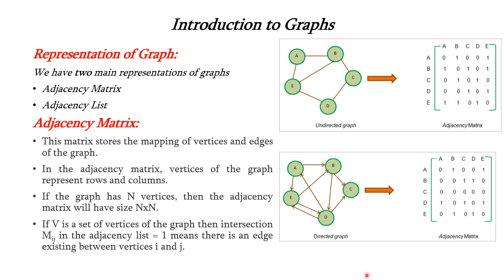For a directed graph we have to consider the direction. If there is a directional link between two vertices we represent 1, otherwise 0. So from A to A no directional link; from A to B yes, so 1; from A to C no, so 0; from A to D there is a line but it is not directed from A to D, so 0; from A to E yes, so 1. Similarly we have to write for other rows and columns.